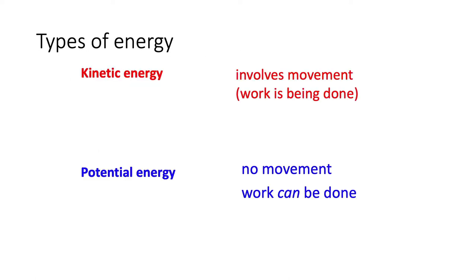There are a couple of ways we can divide energy into types. The most common is to talk about kinetic energy, which is basically the energy involved in moving something in some particular way. Because something is being moved, that means work is being done — work is the result of a force acting over a distance. Potential energy is any other sort of energy, where no movement is being done — it's work that can be done.